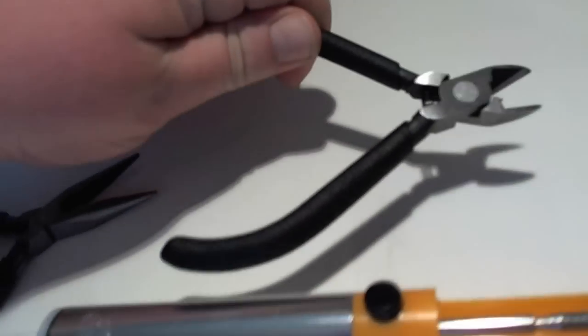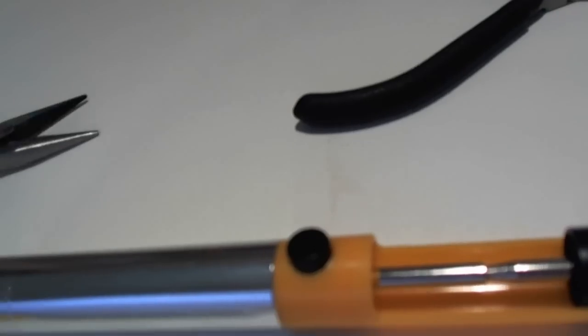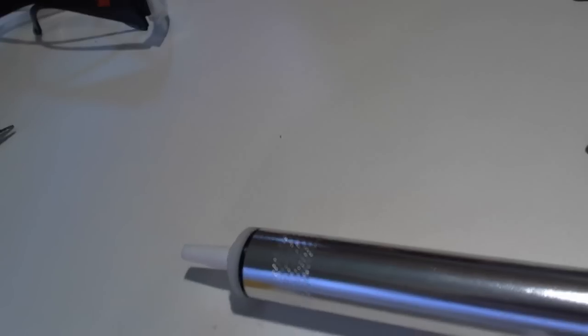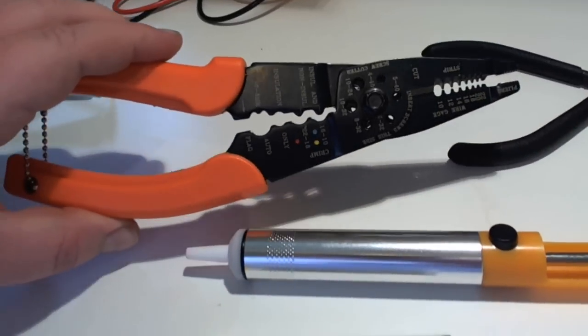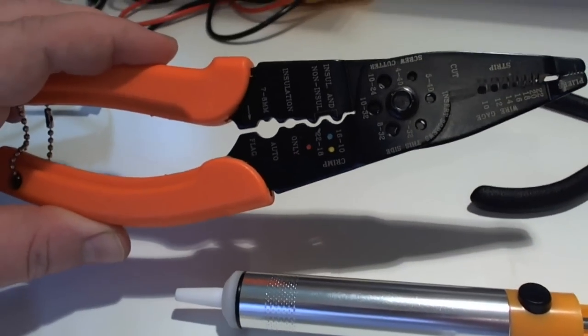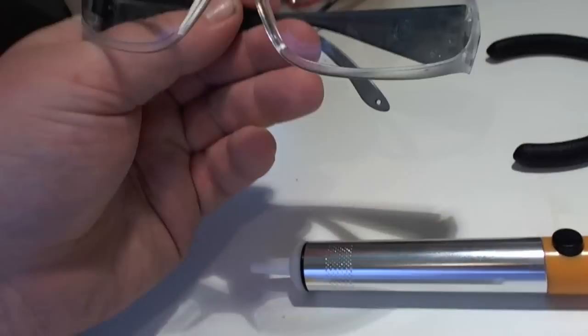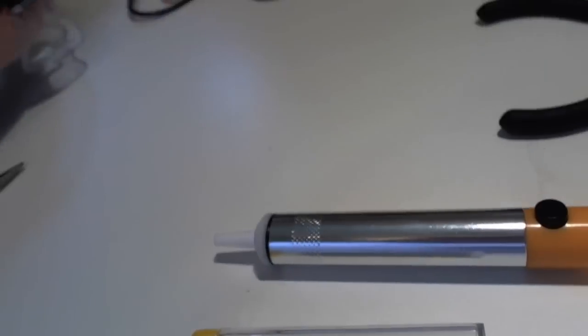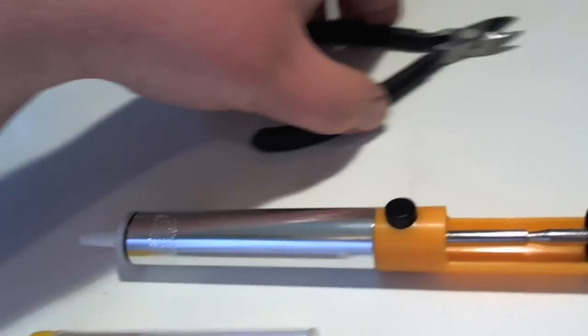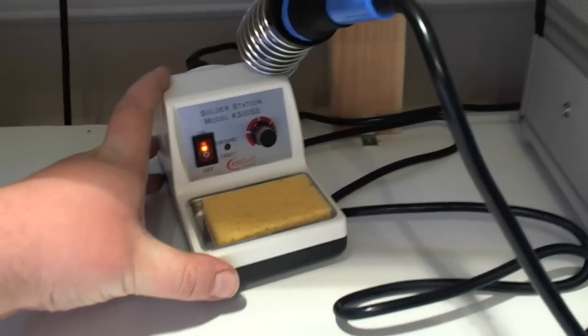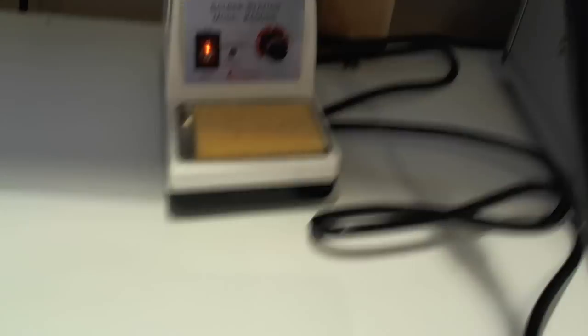Got some wire clips here and just an ordinary pair of pliers, and just in case, got some wire strippers here. You're also going to need a pair of safety glasses, and then you also don't want to forget your soldering iron. This one's just a basic soldering iron, nothing too fancy about it.